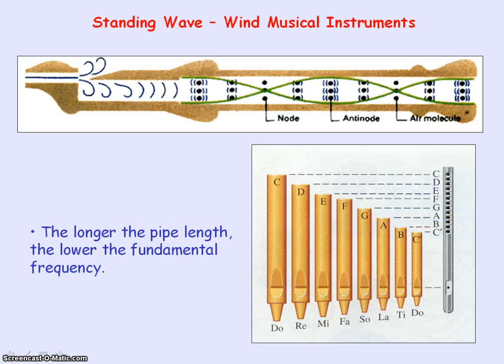Wind musical instruments rely on standing waves in air columns inside the pipe. The longer the pipe length of the instrument, the longer the wavelength, and so the lower the fundamental frequency and the lower the note being produced.